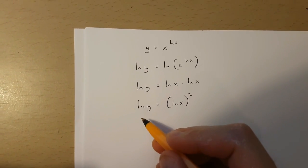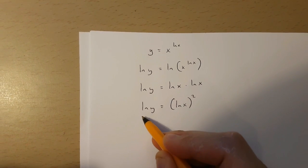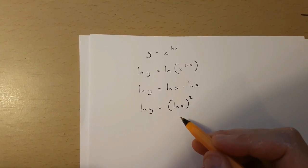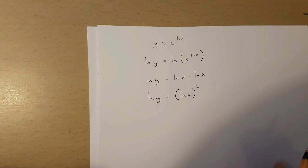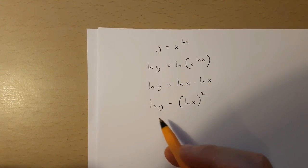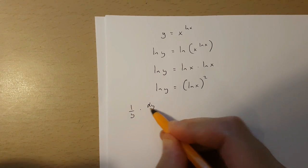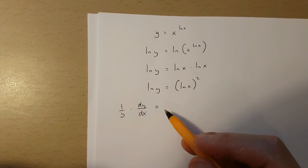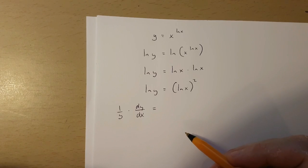Now I'm going to differentiate both sides of this equation by using implicit differentiation on the left-hand side and by using the chain rule on the right-hand side. If I use implicit differentiation on the left-hand side, I'm going to get 1 over y times dy over dx, and that is going to be equal to this side of the equation differentiated.